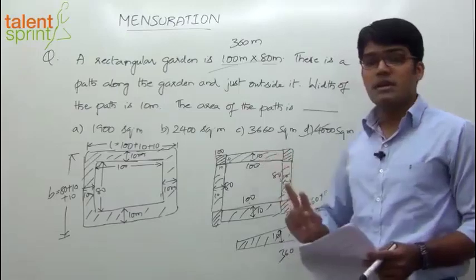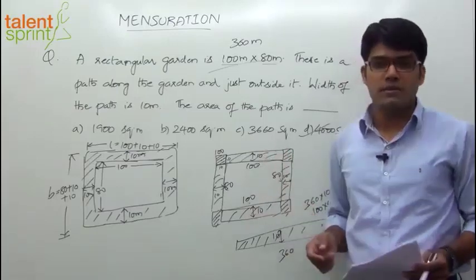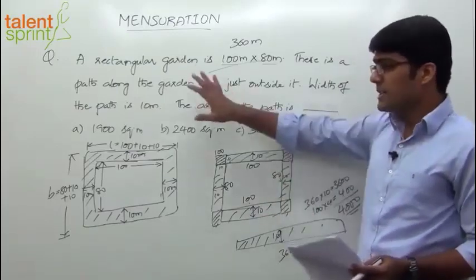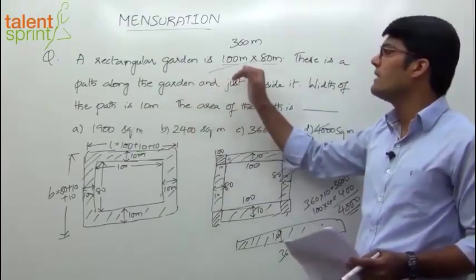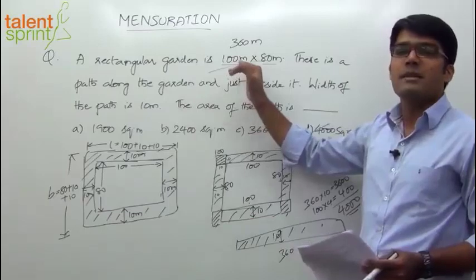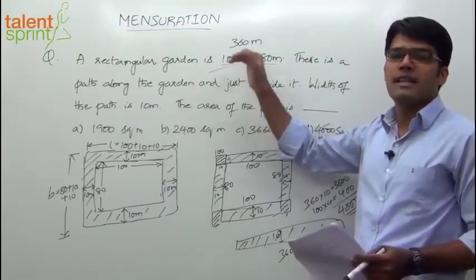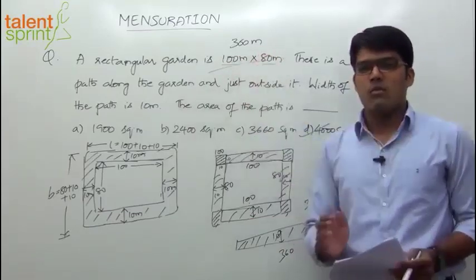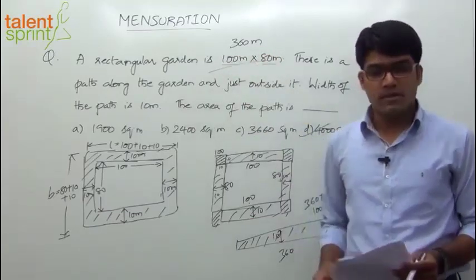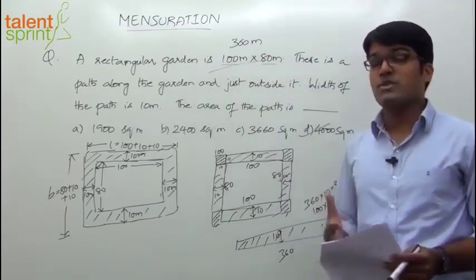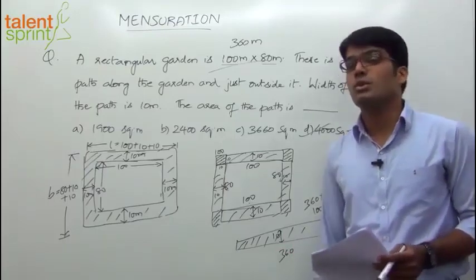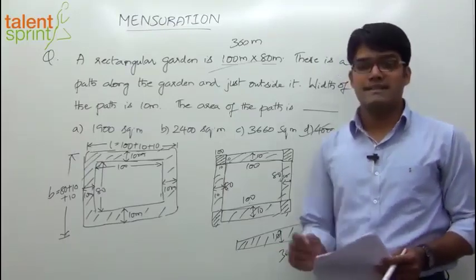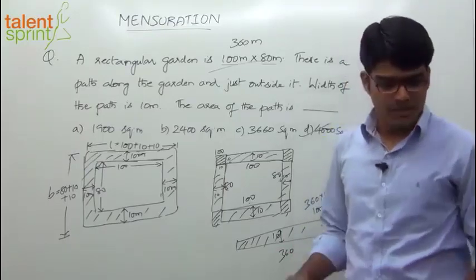So one question can be given in two different forms. What is given here is simple, but to make it complicated the question may give only the perimeter instead of length and breadth. Go well prepared for the exam because mensuration is a very important topic for competitive exams.